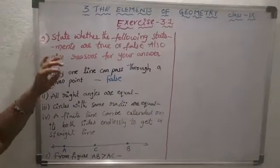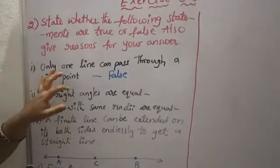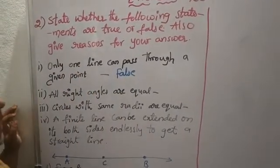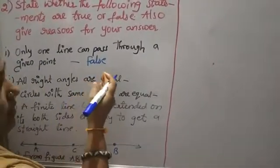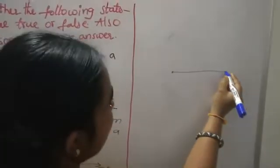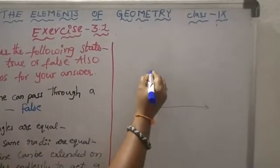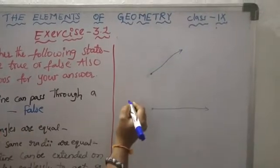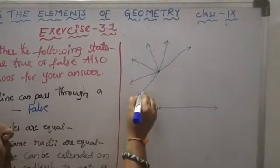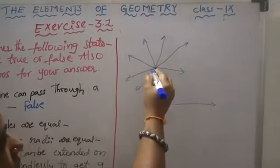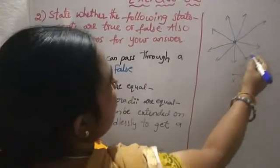Now going to the second question: state whether the following statements are true or false, and give reasons for your answer. First: only one line can pass through a given point. For a given point, they are saying we can draw only one line. But in the previous class, we discussed that through one point we can draw many lines passing through it. So the statement is false.